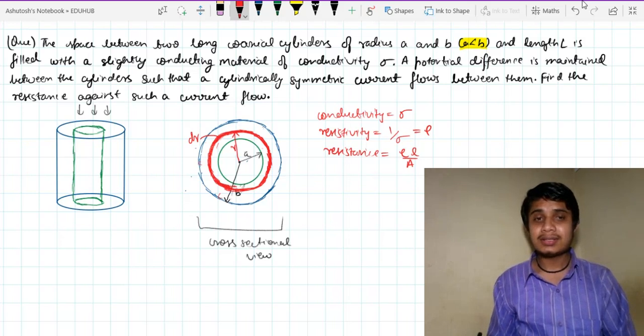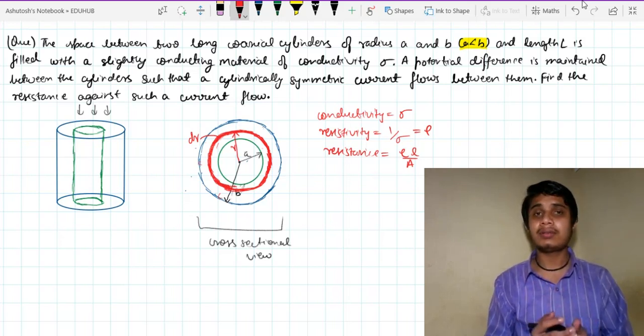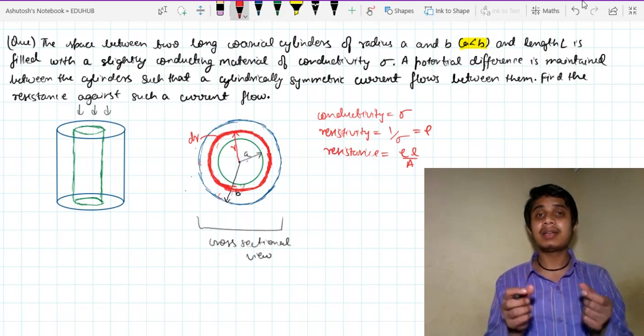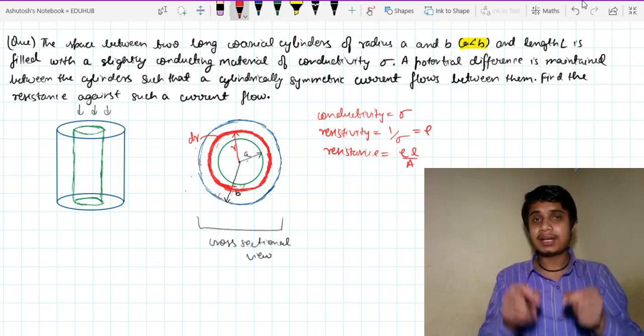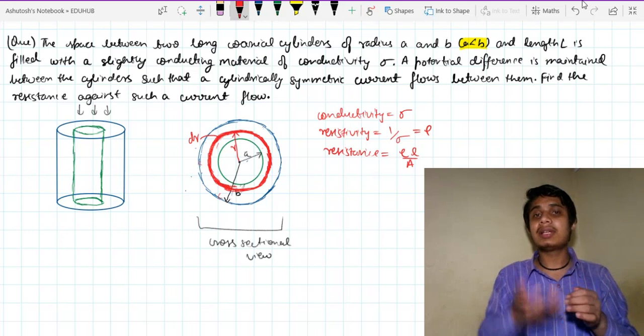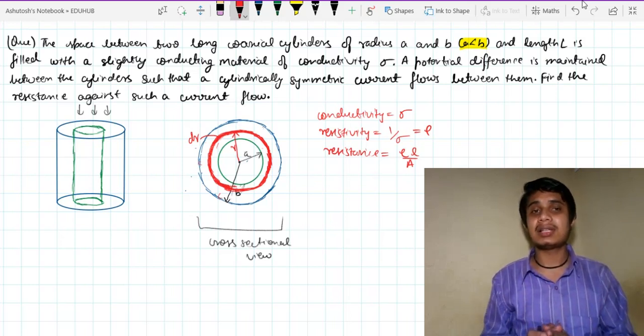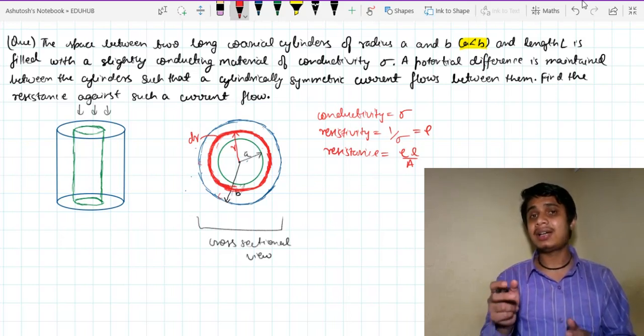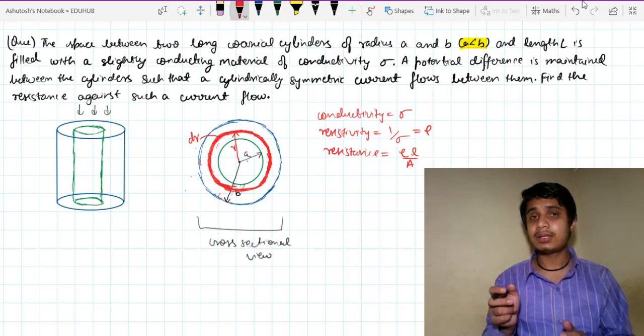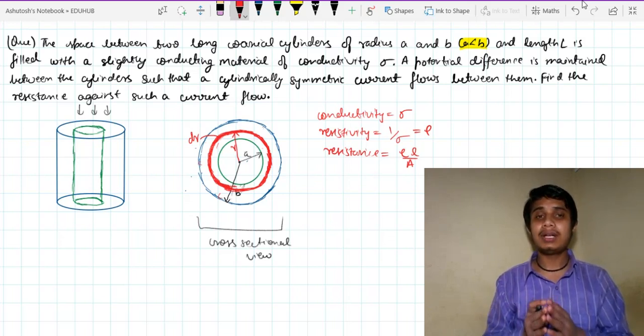So what is this shell? This is a shell, the red colored shell which you can see. Obviously in 2D it will be a circle, it will be a ring in fact. And if you place ring over ring over ring, then you will get a cylindrical shell. So at a distance R I have chosen a shell of width dr.